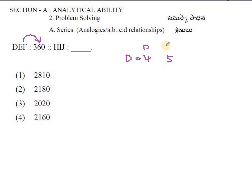So D is 4, E is 5, and F is 6. If you multiply 4 times 5 times 6, this equals 20 times 6, which is 120. Here we see 360, so 120 multiplied by 3 gives us 360.